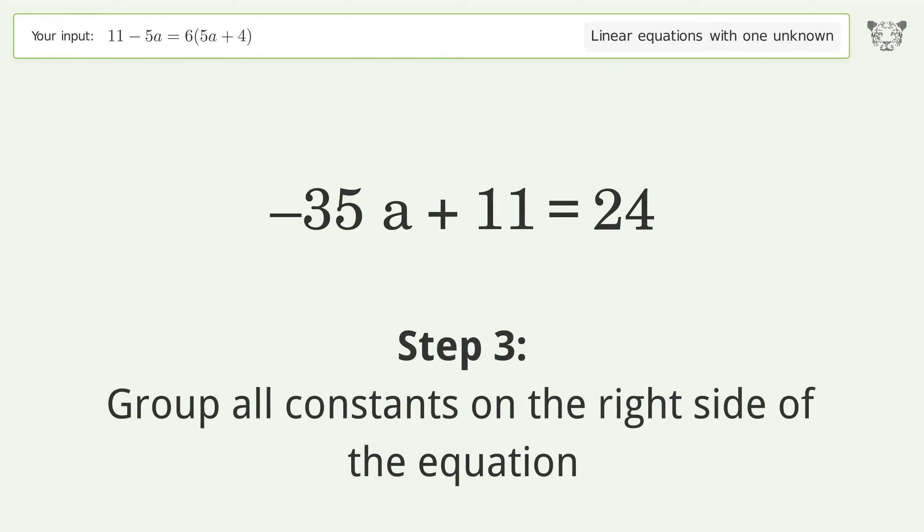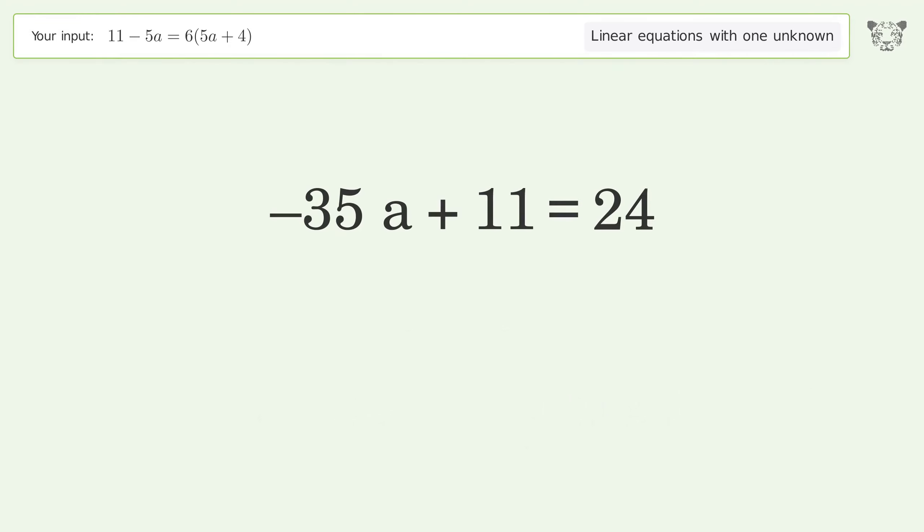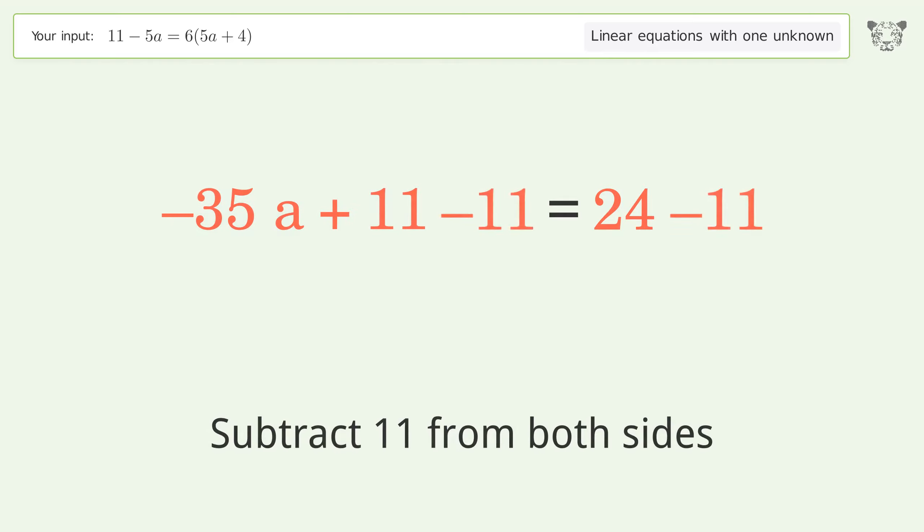Group all constants on the right side of the equation. Subtract 11 from both sides. Simplify the arithmetic.